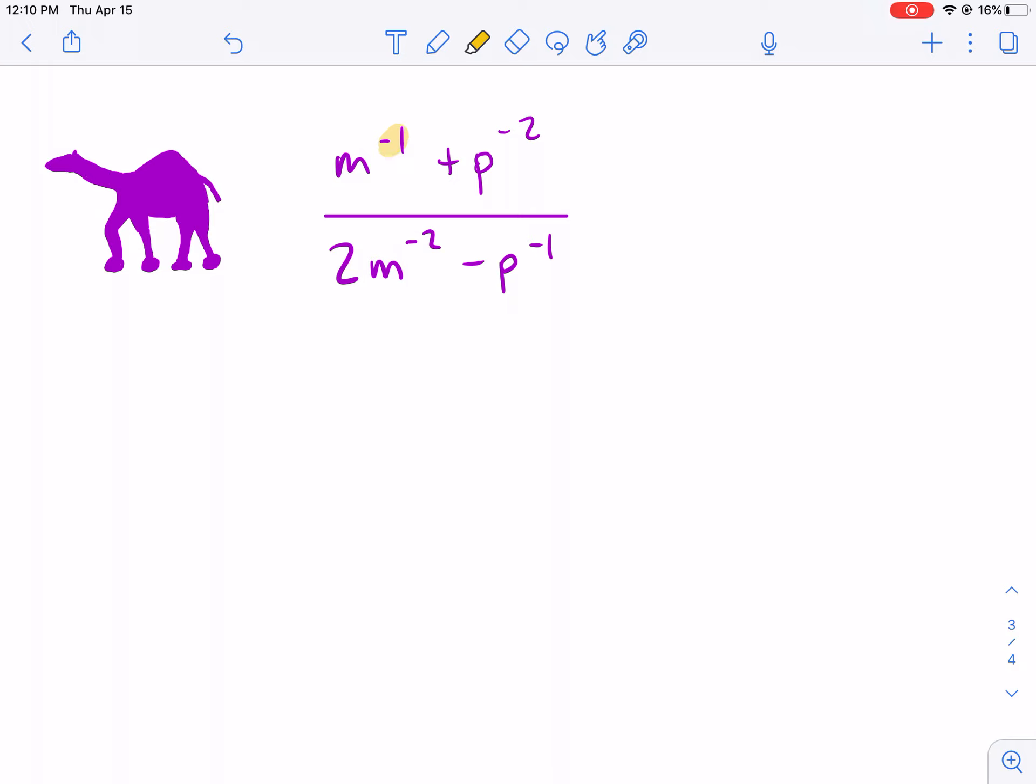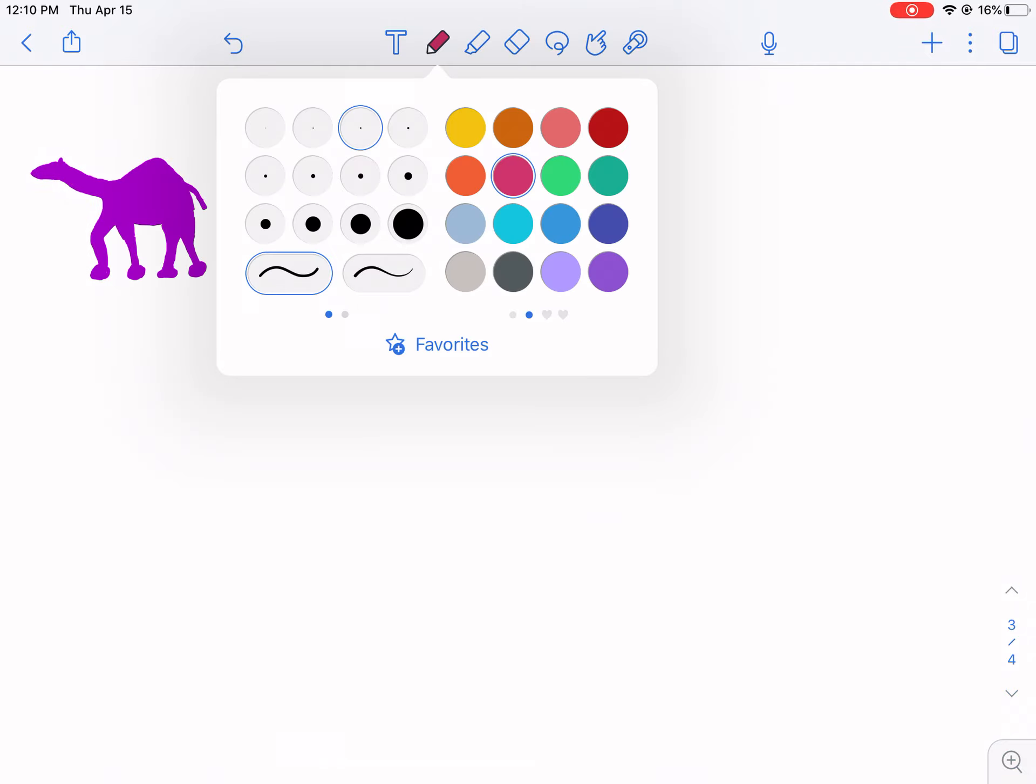Now, the tricky thing with this, it's not as bad as it seems. We just have these negative exponents here. So we're going to have to try to break this down a little bit and simplify this numerator.